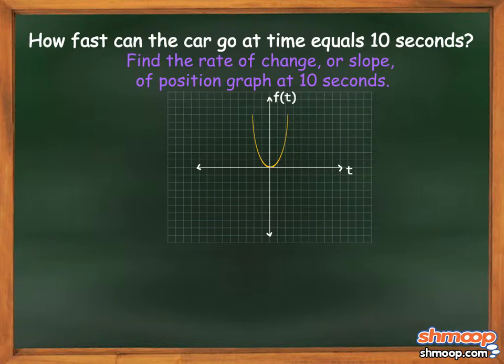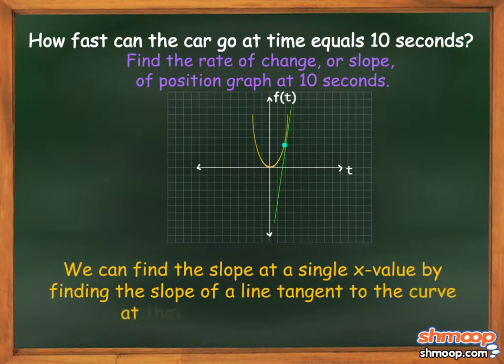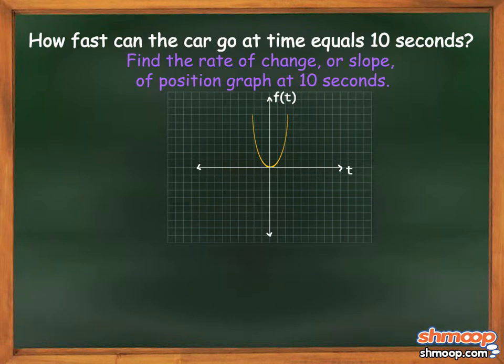Even though the slope is changing, we can find the slope at a single x value by finding the slope of a line tangent to the curve at that point when t equals 10. To find the tangent line, we start by finding the line that goes through t equals 10 and another point on the graph. This is called the secant line.